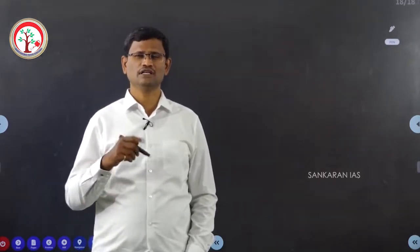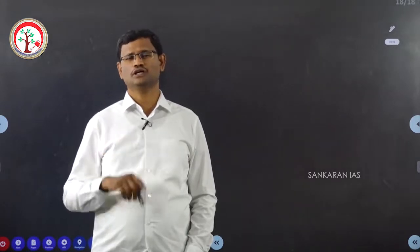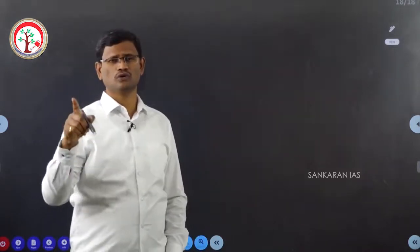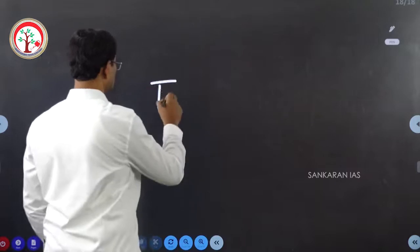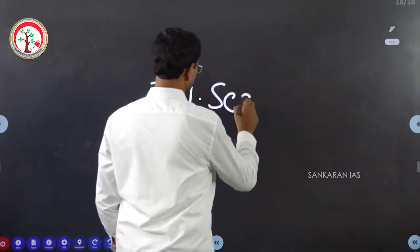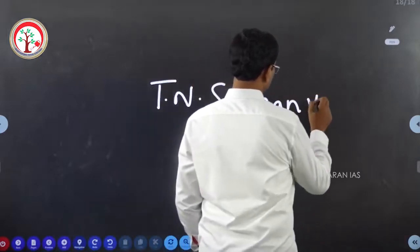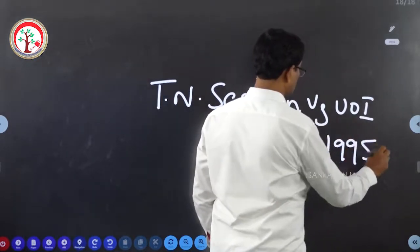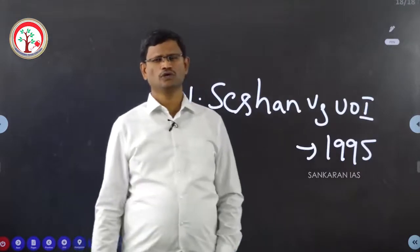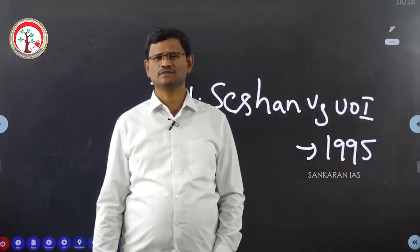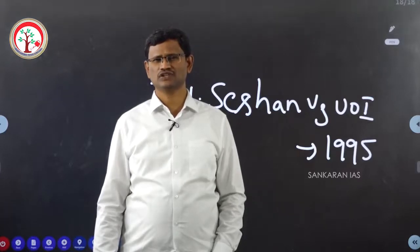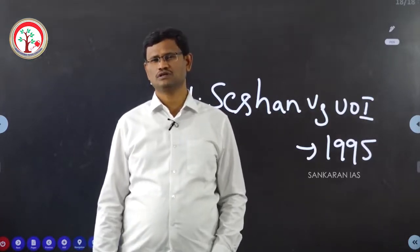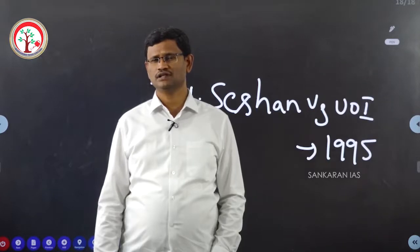This amendment was challenged before the Supreme Court in a case known as T.N. Seshan, the Chief Election Commissioner versus Union of India, 1995. In this case, T.N. Seshan argued that giving the other two Central Election Commissioners the same status and powers as the Chief Election Commissioner had adversely affected the powers of the Chief Election Commissioner. The Supreme Court did not agree with T.N. Seshan and his petition was dismissed.